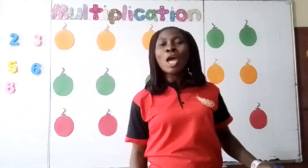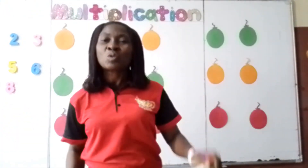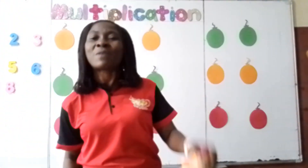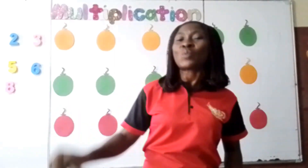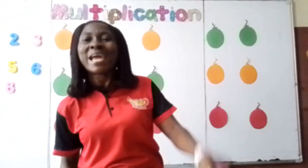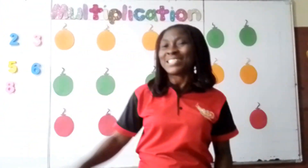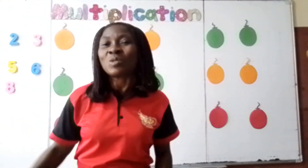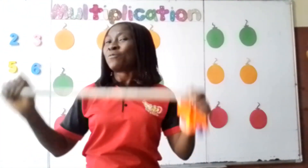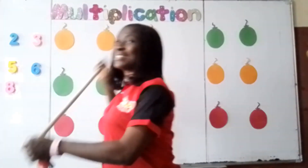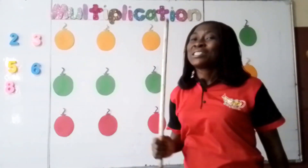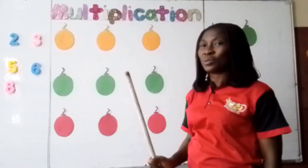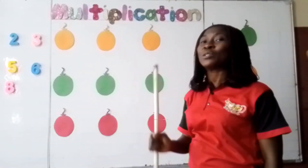Oh come let us sing our tables all together and while we sing we march along the line. Let us sing: 1 and 2, 2 and 4, 3 and 6, 4 and 8, 5 and 10, 6 and 12, 7 and 14, 8 and 16, 9 and 18, 10 and 20, 11 and 22, 12 and 24. That is the multiplication table number 2.